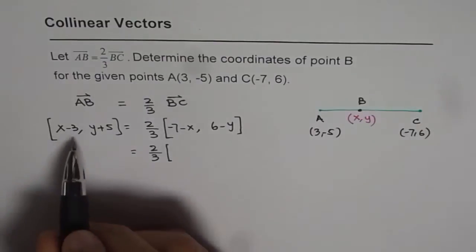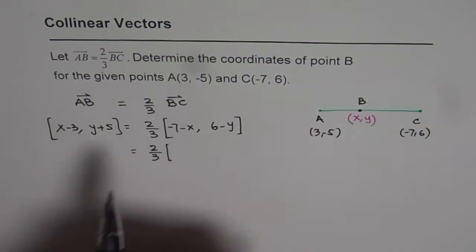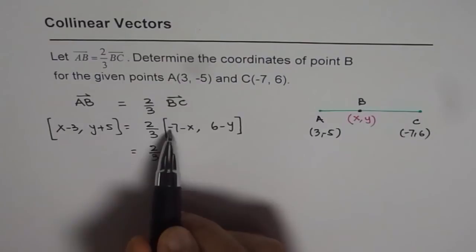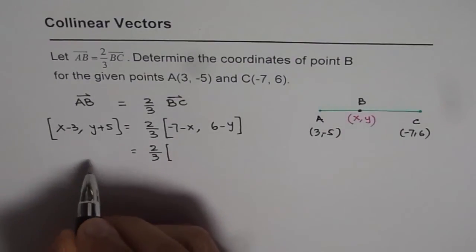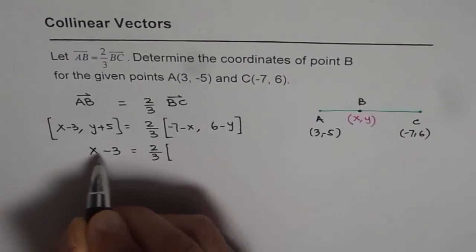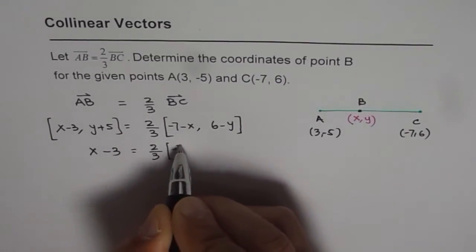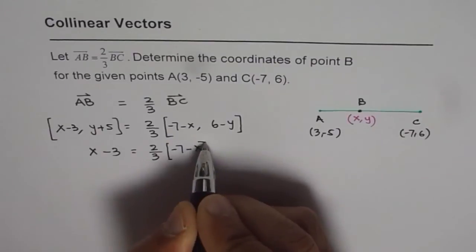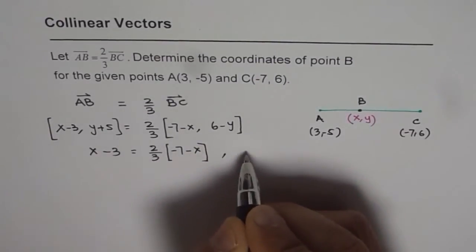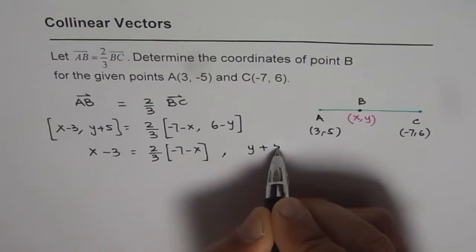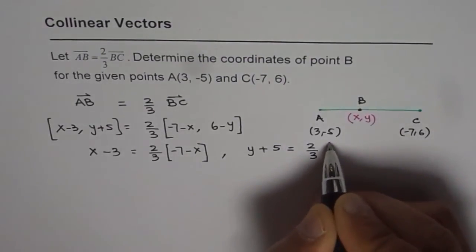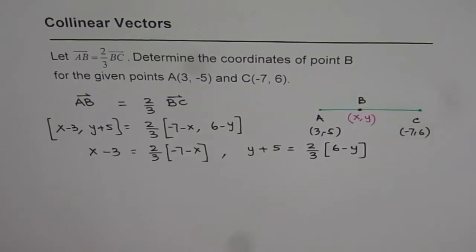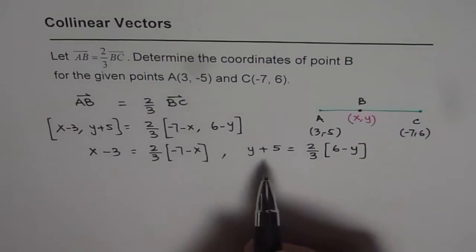We can just equate X minus 3 equals 2 thirds of minus 7 minus X. This is the first part. And we can say Y plus 5 equals 2 thirds of 6 minus Y. So from here we get these two equations. We can solve for X and Y from here.